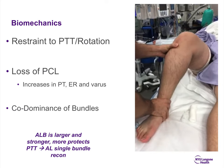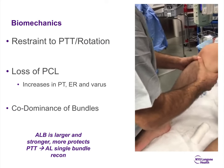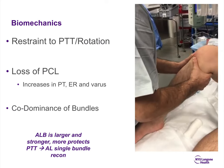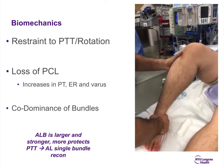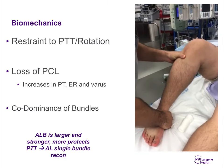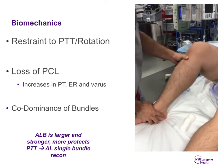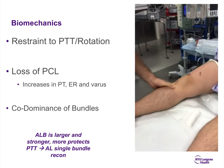In terms of biomechanics, the PCL is very important for posterior tibial translation, especially at 90 degrees, and it has a component of rotational stability as well. When you lose the PCL, there are increases in posterior tibial translation, external rotation, and varus. There is a relative co-dominance of the bundles through the range of motion, but the anterolateral bundle is larger, stronger, and more protective against posterior tibial translation — hence why we typically reconstruct the anterolateral bundle.